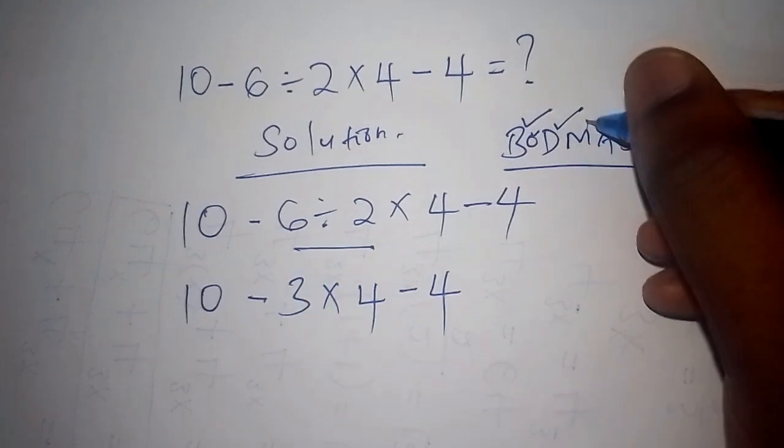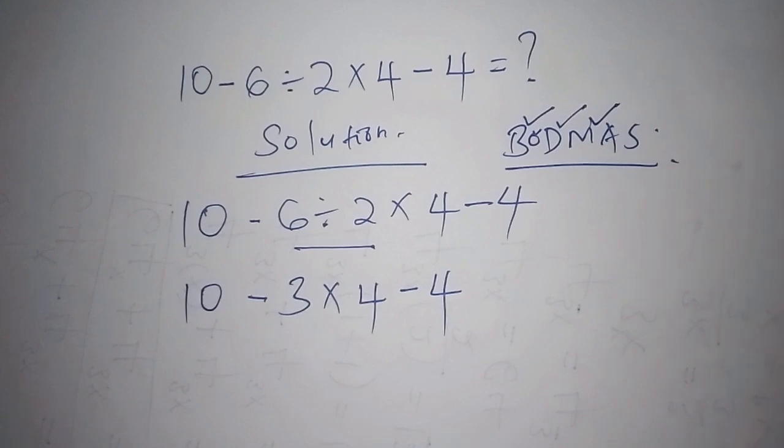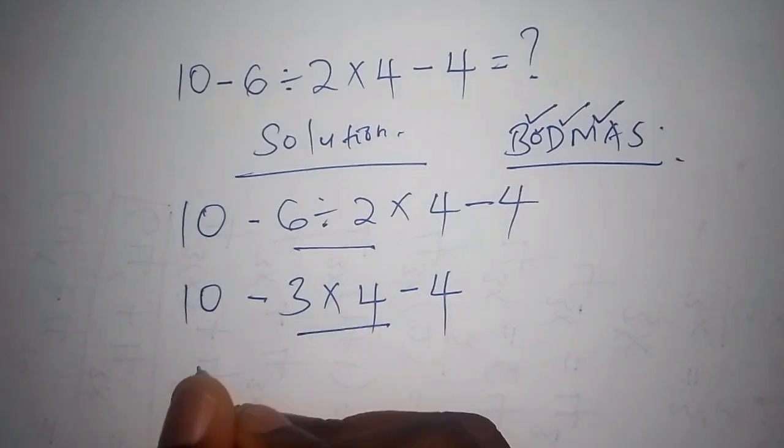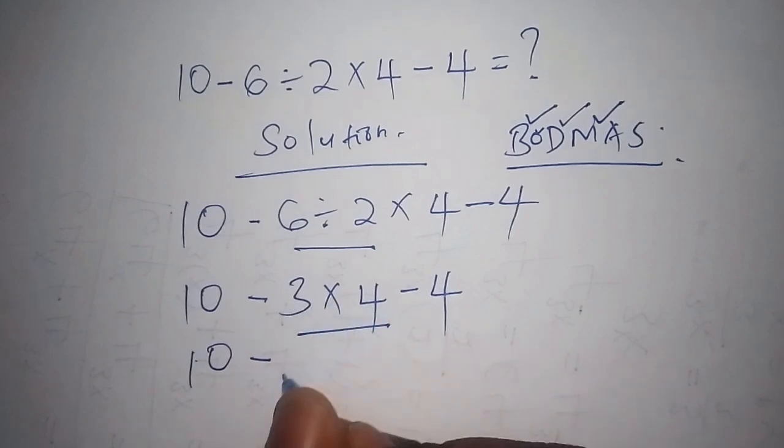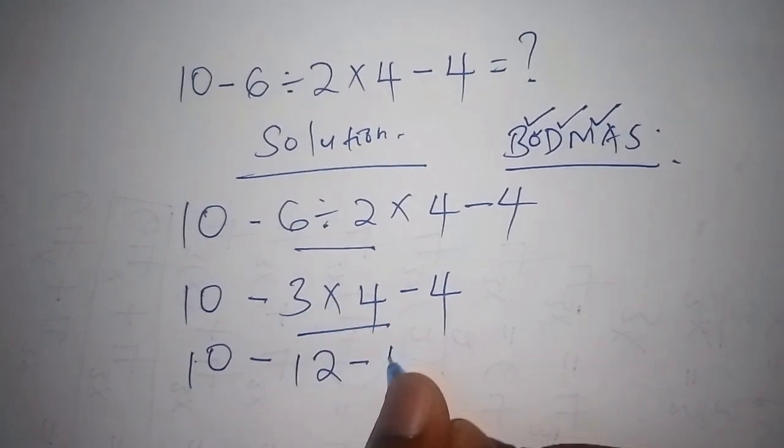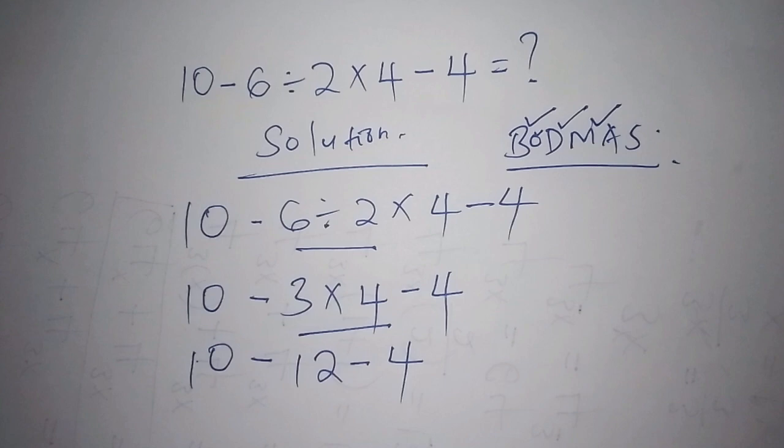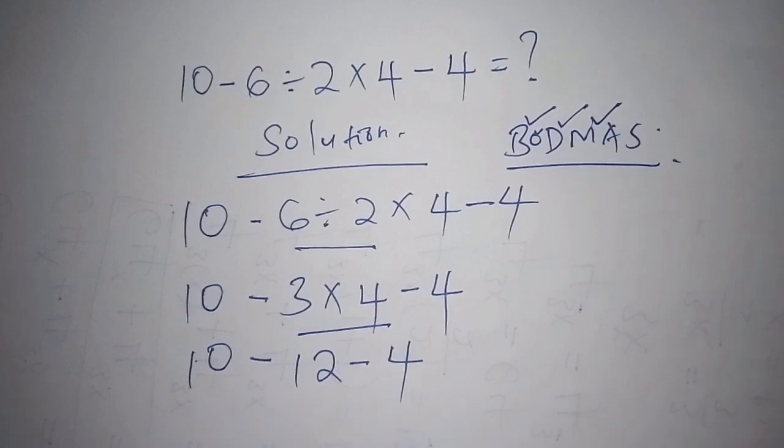Now from there now we move to M. M stands for the multiplication. So we have to work out this sign here. So here now we shall have 10 minus 3 multiplied by 4 is 12 minus 4. So now we shall have 10 minus 12 minus 4.